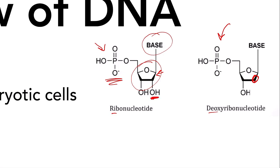Whereas in the ribonucleotide, there is a hydroxyl group on the second carbon. Also, ribonucleotides are found in RNA. Deoxyribonucleotides — you guessed it — are found in DNA.